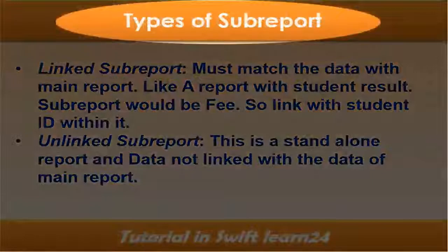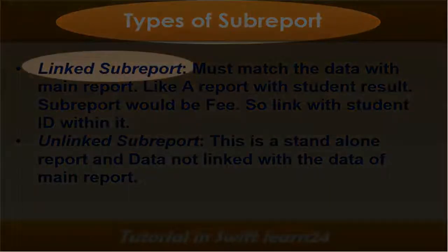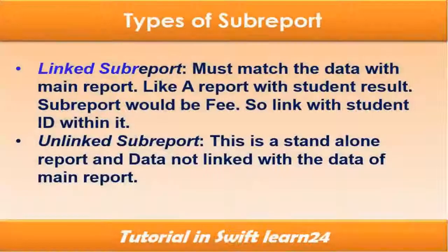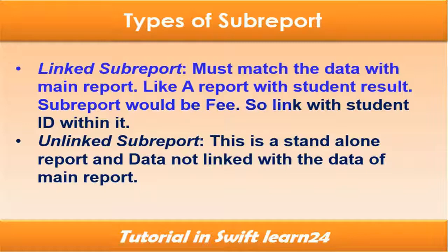There are two types of sub-reports: linked sub-report and unlinked sub-report. A linked sub-report must match the data with the main report — for example, a report with student results where the sub-report links with student ID. Unlike a linked sub-report, an unlinked sub-report is a standalone report whose data is not linked with the data of the main report.